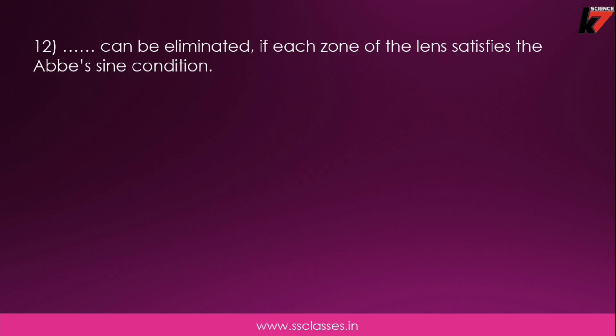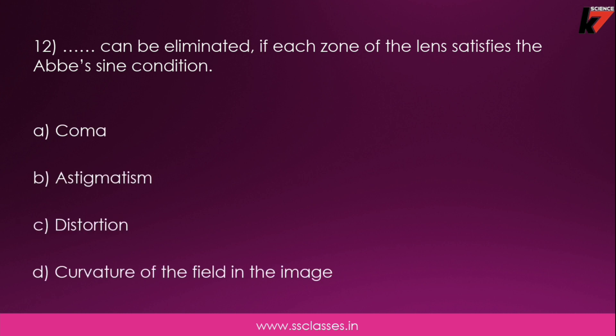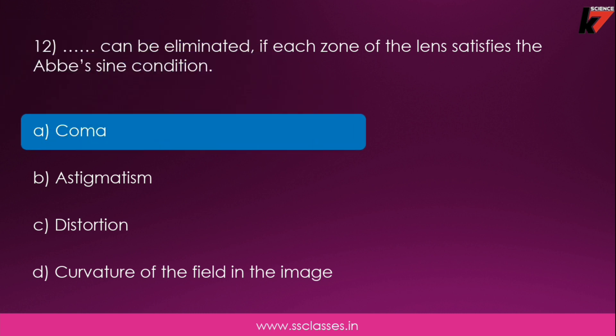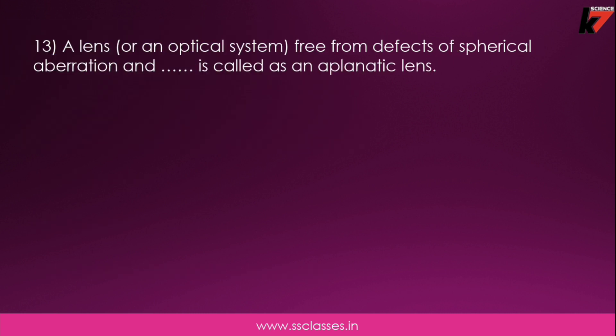Twelfth question: which aberration can be eliminated if each zone of the lens satisfies the sine condition? The correct answer for this question is coma.